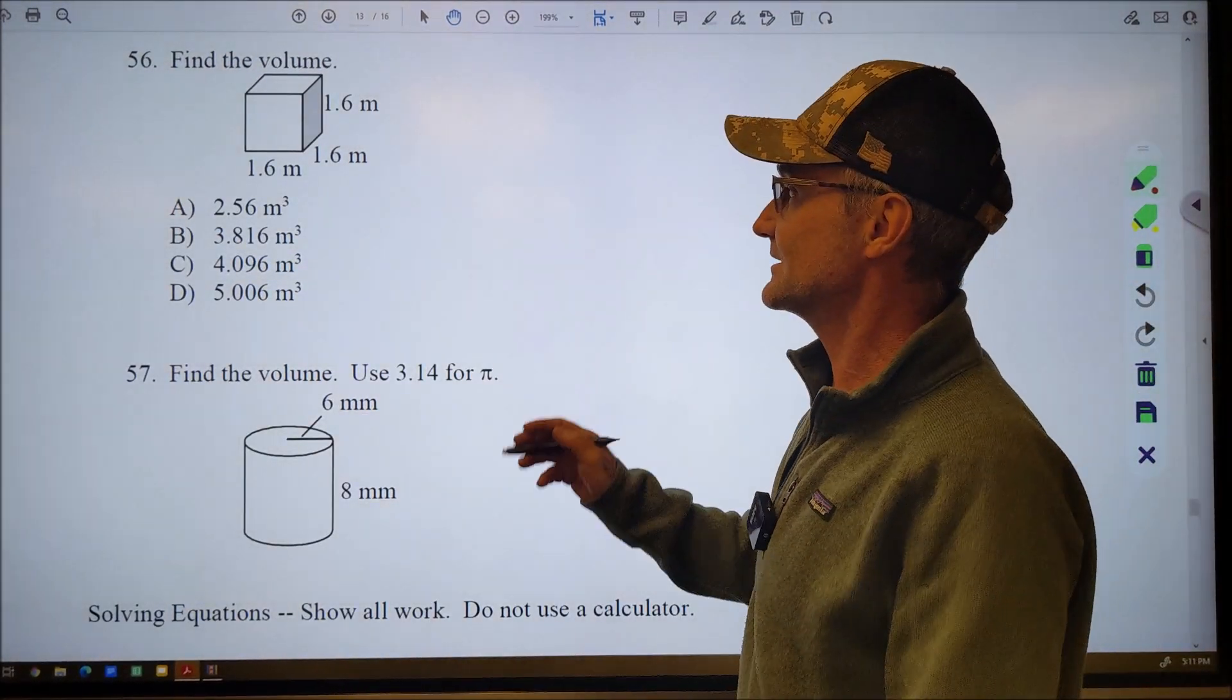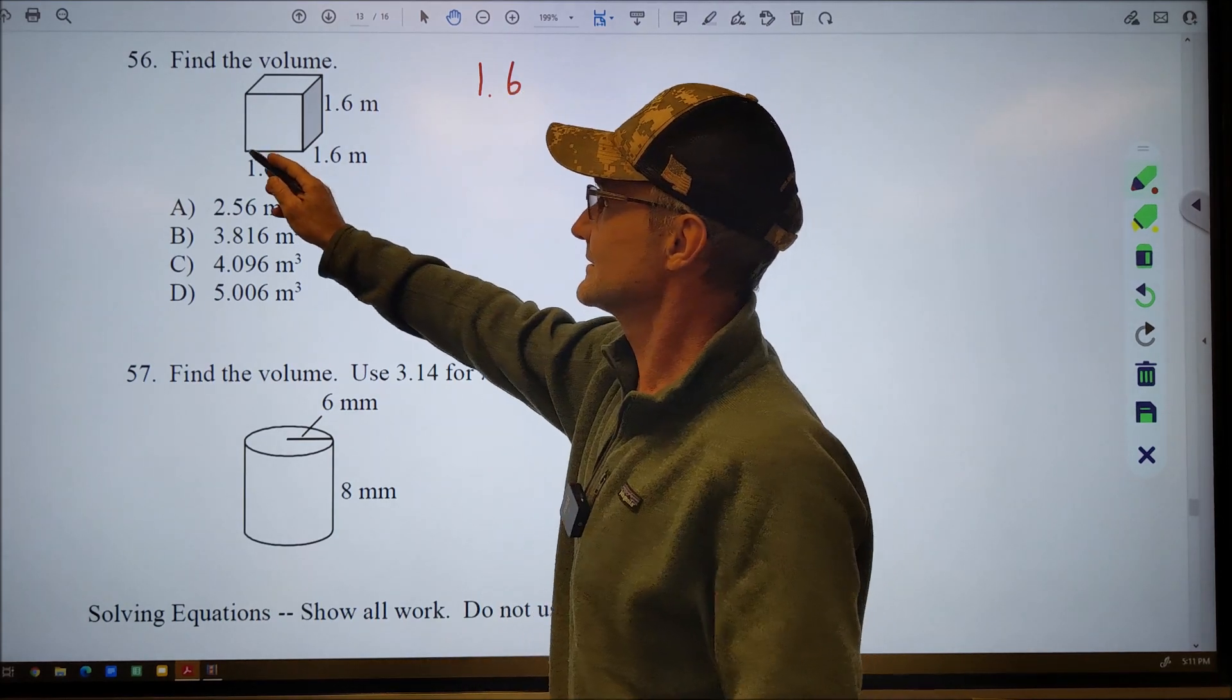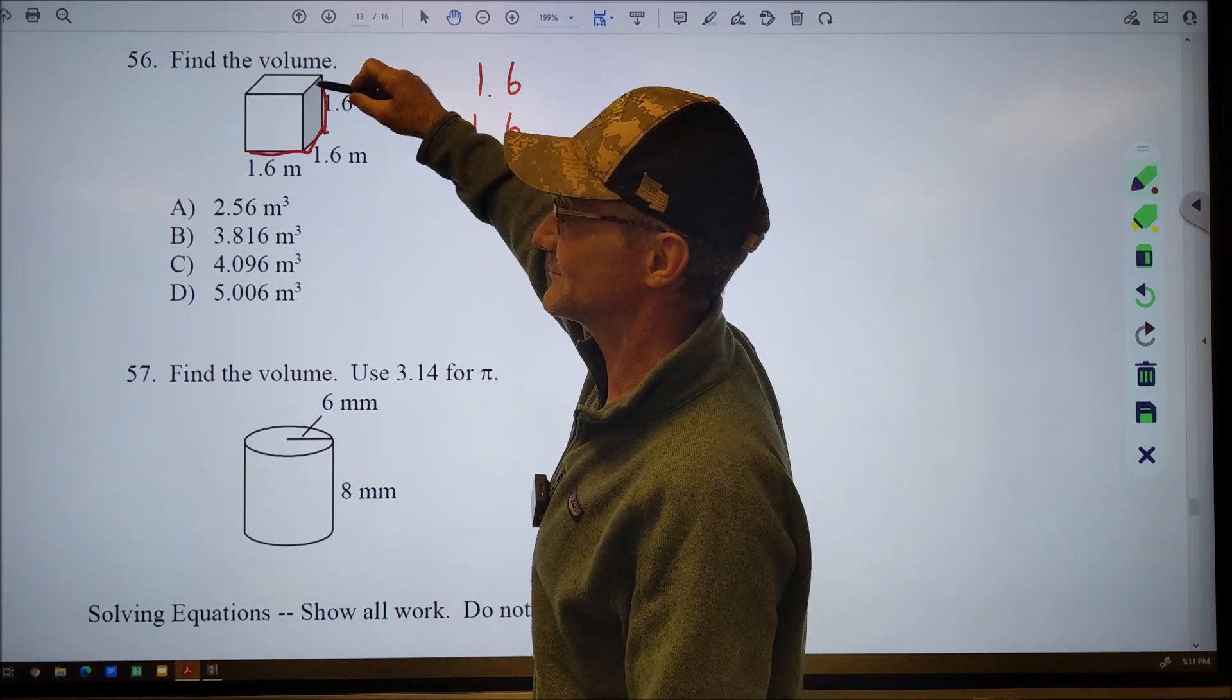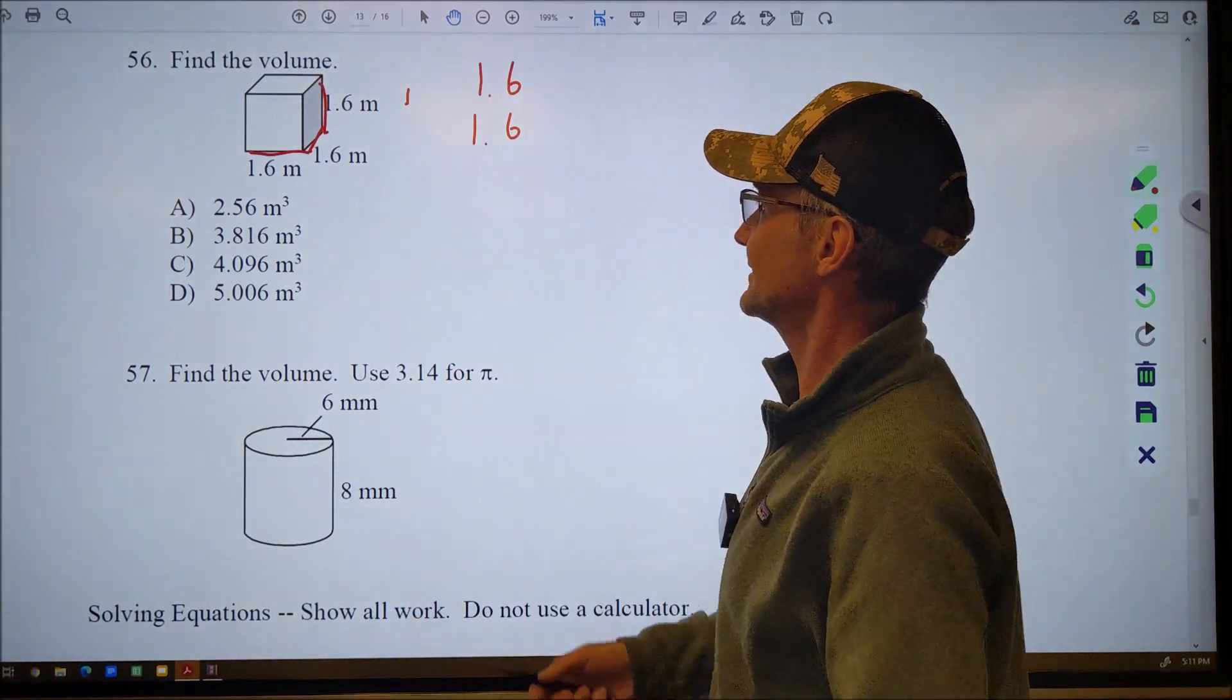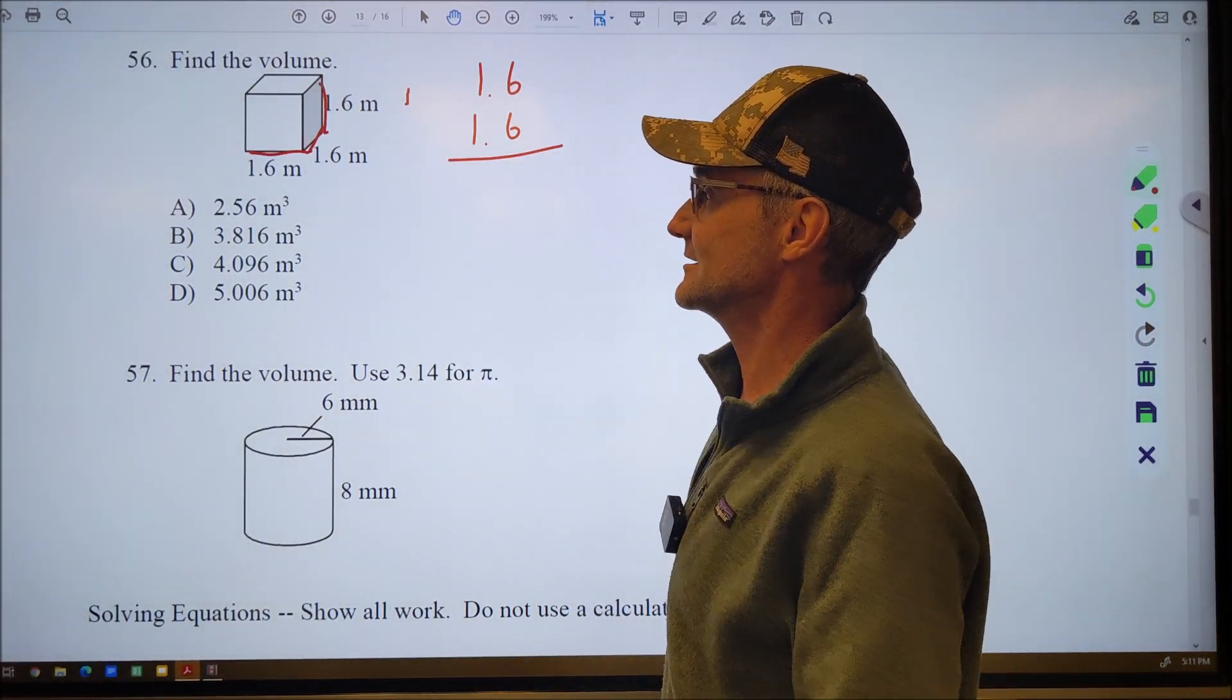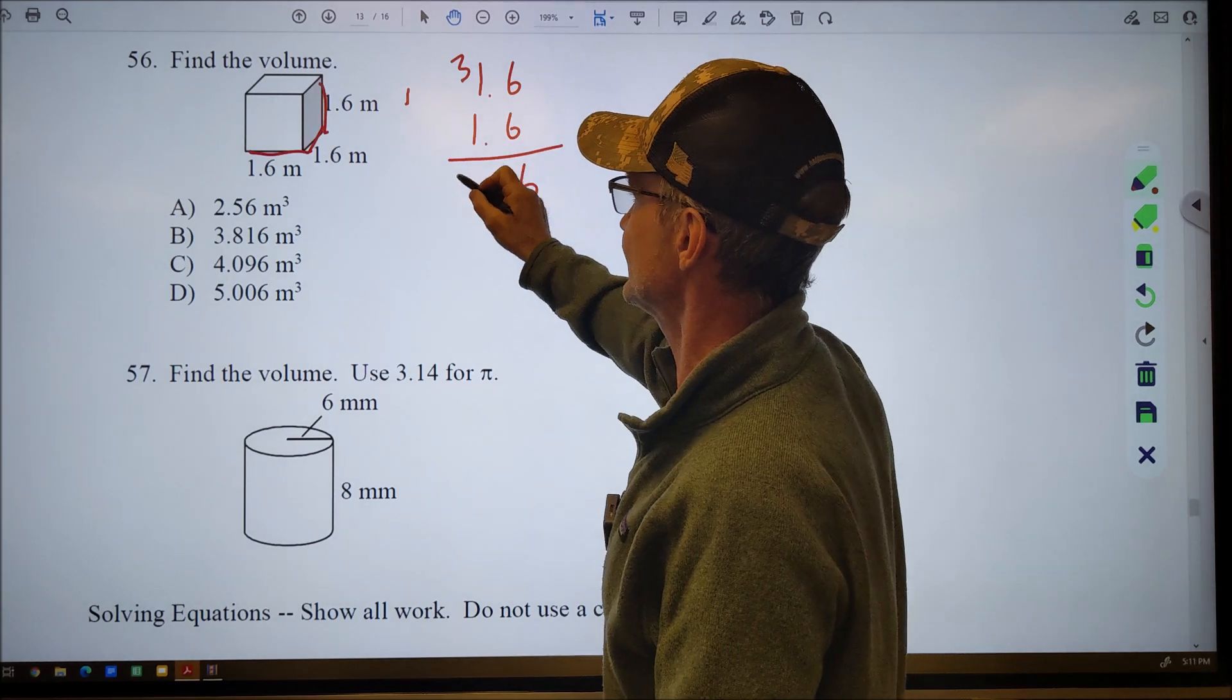Number 56, find the volume. Volume is going to be base area, which would be that square at the bottom, 1.6 times the depth, 1.6. That's going to be my base area. And then I take my base area times my height. That's a rectangular prism or a square base prism. I'm going to do 1.6 times 1.6 first to find my base area. Then I'm going to multiply by my height, see if anything's going to be close, if I can make a guess from there.